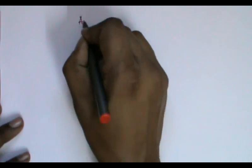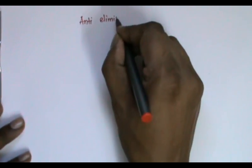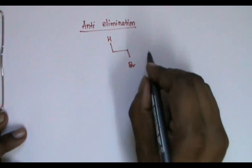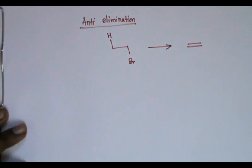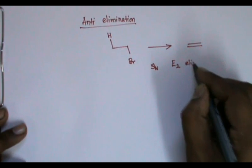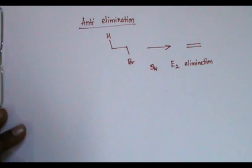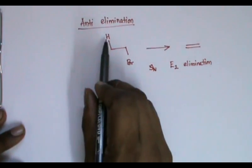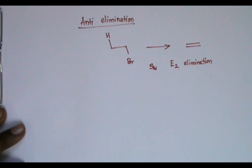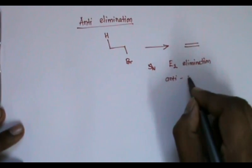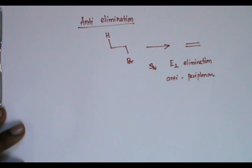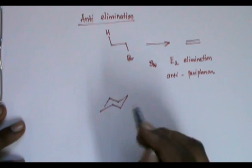The last category is anti elimination. In this, the leaving group and the hydrogen must be trans to each other for the reaction to take place. This is E2 elimination. The hydrogen and the halogen (leaving group) must be in the same plane and trans to each other — that is called an antiperiplanar arrangement.